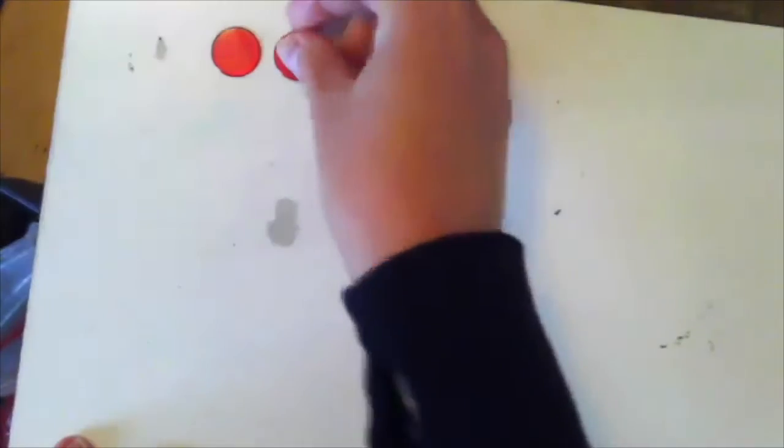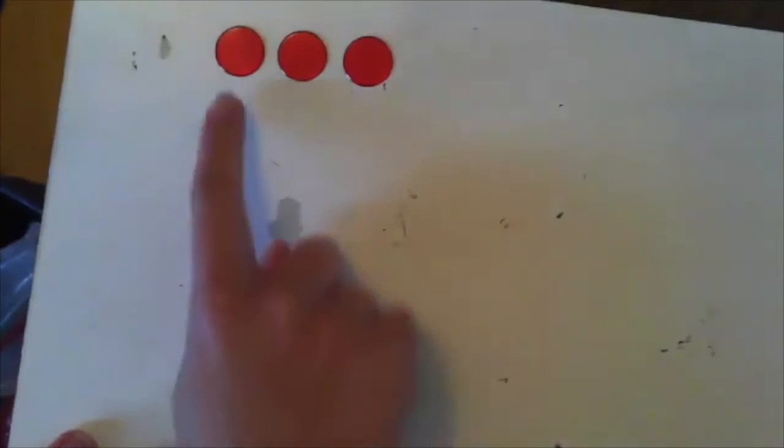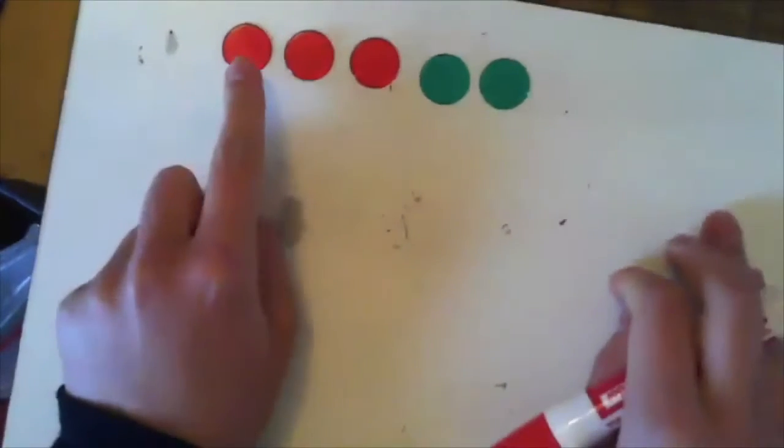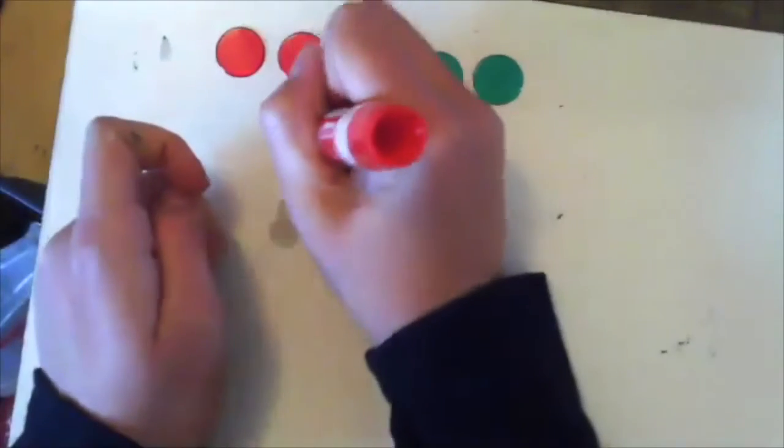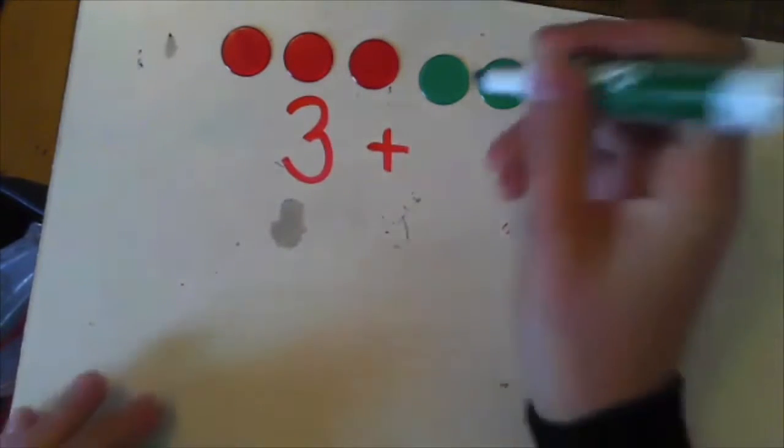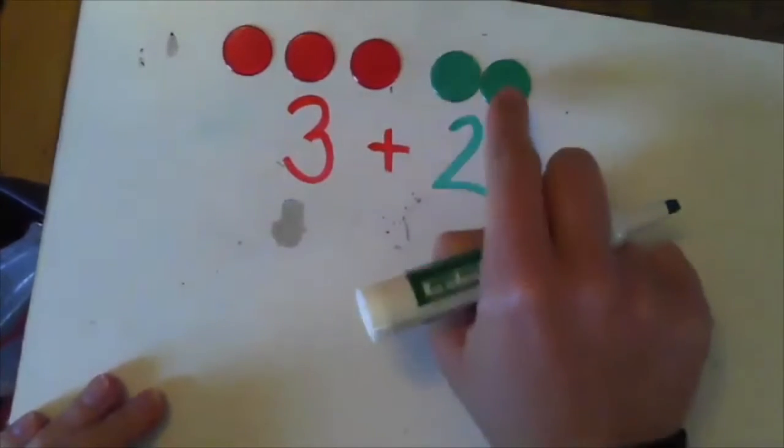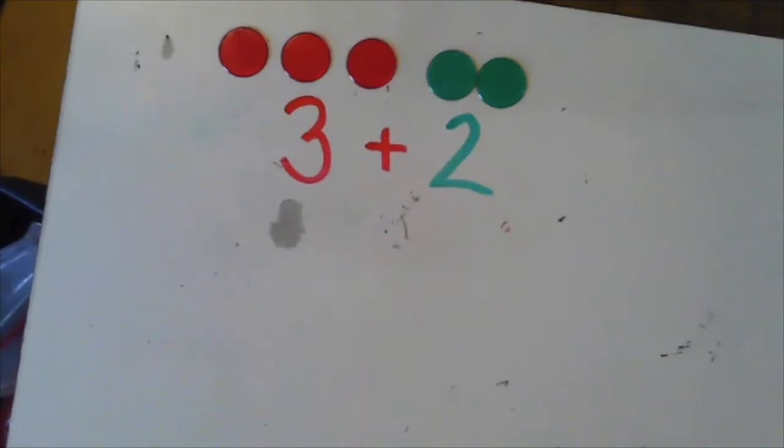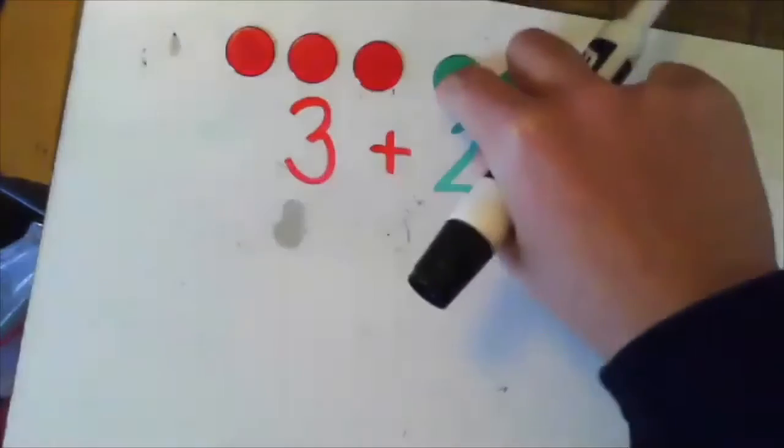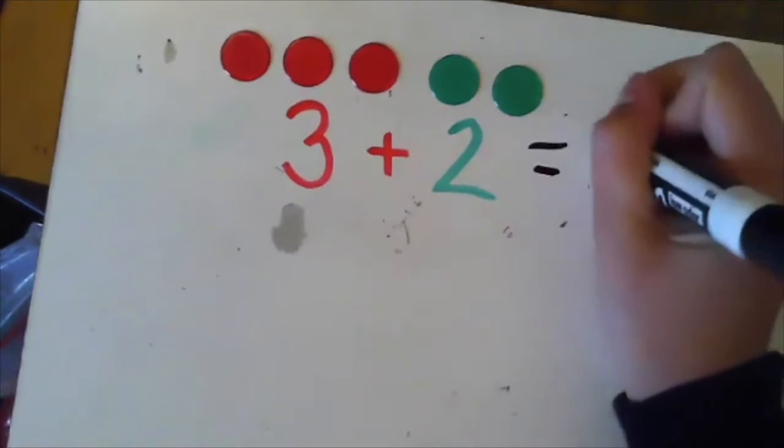Let's start by having three red chips, one, two, three, and two green chips. Let me write a number sentence for that. I have three red chips plus two green chips. How many chips do I have in all? Did you say five? Let's count them. One, two, three, four, five. Equals five.